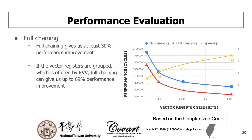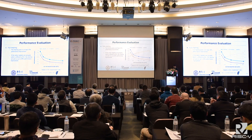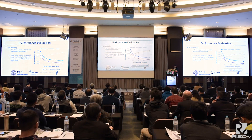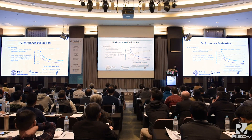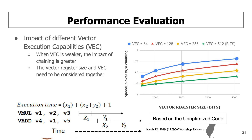Next is full chaining, also based on the optimized code. Full chaining gives us at least 30% additional performance improvement. And if your vector registers are grouped — which is offered by the RISC-V vector extension — full chaining can give us up to 69% performance improvement. We also explore the impact of different vector execution capabilities. We can see clearly in this graph that when the vector execution capability is smaller, the impact of chaining is greater.